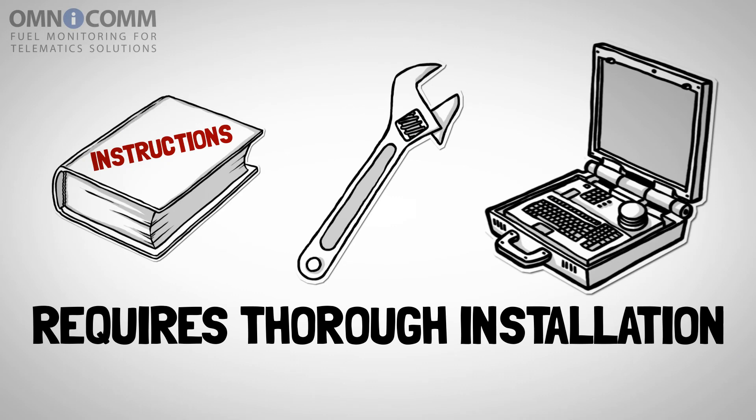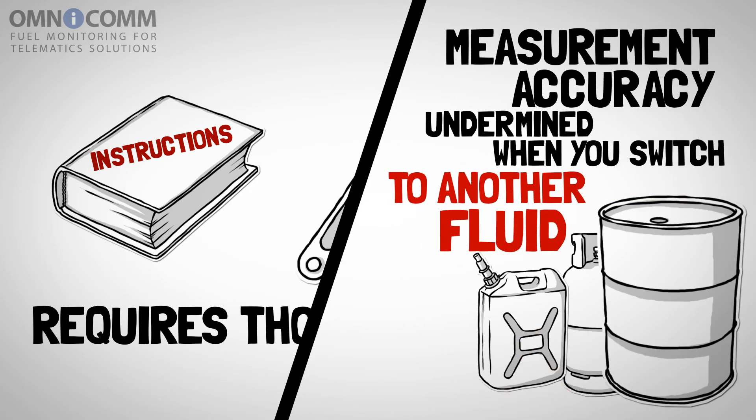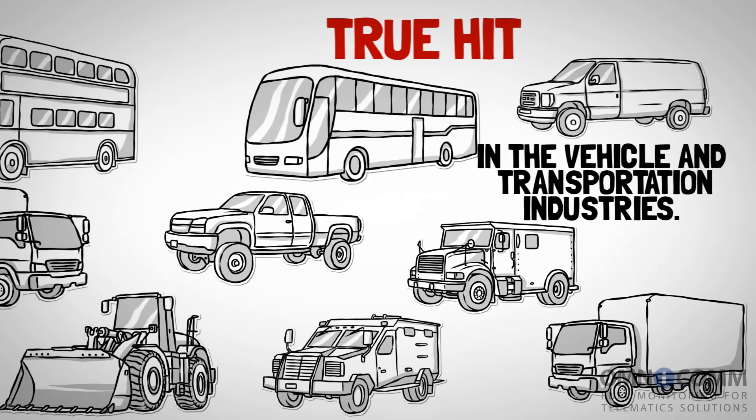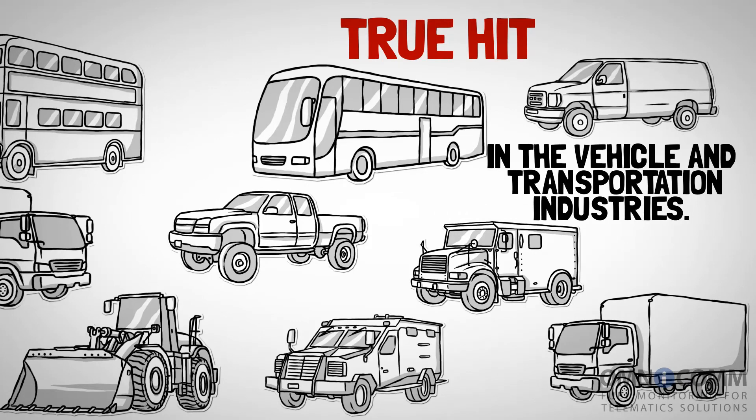There are certain downsides, however. Installing this sensor requires cutting into the fuel tank, and it only works with a single type of fluid originally exploited by the vehicle. Should not be a major problem, though, as you're unlikely to switch fuel type that often. With capacitive sensors, the advantages outweigh the drawbacks. That is why they are a true hit in the vehicle and transportation industries.